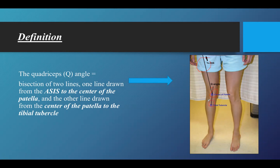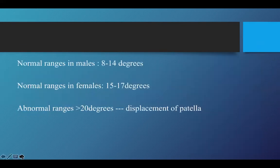Why is this angle important and why do we look at the quadriceps angle in any lower extremity malalignments is what we're going to review in the next few slides. Before that, let's catch up on the normal ranges.